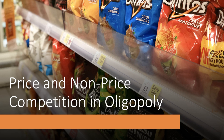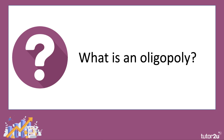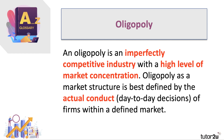Welcome to a Year 13 microeconomics video looking at aspects of price and non-price competition within an oligopoly. An oligopoly is a market structure known as an imperfectly competitive market with a high level of market concentration, often described as competition among the few. In other words, there will be a few dominant firms, and it's a market structure more accurately defined by the conduct or day-to-day decisions of firms within a defined market.